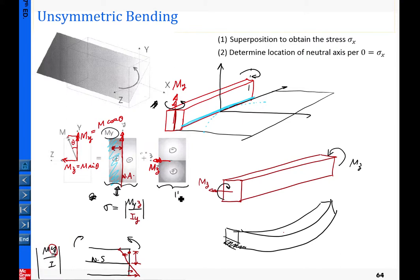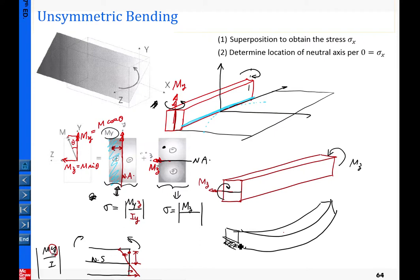For the Mz subsystem, sigma equals the magnitude Mz times the distance from the point to the neutral axis, which is measured in the y coordinate, divided by the moment of inertia with respect to the z-axis, Iz. So sigma equals Mz times y divided by Iz.